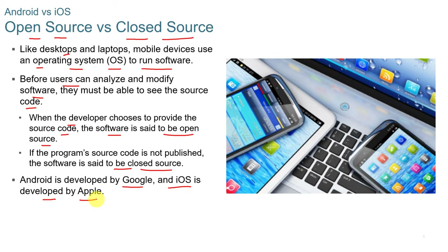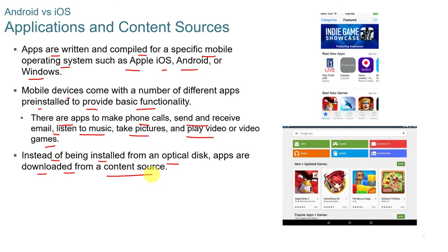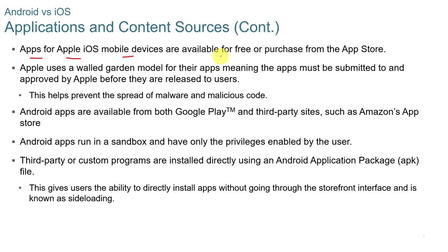Android is developed by Google and iOS is developed by Apple. Apps are written and compiled for a specific mobile operating system such as Apple iOS, Android, or Windows. Mobile devices come with a number of apps pre-installed to provide basic functionality. Apps for the Apple iOS mobile device are available for free or for purchase through the App Store. Apple uses a walled garden model, meaning apps must be submitted to and approved by Apple before they're released to users.